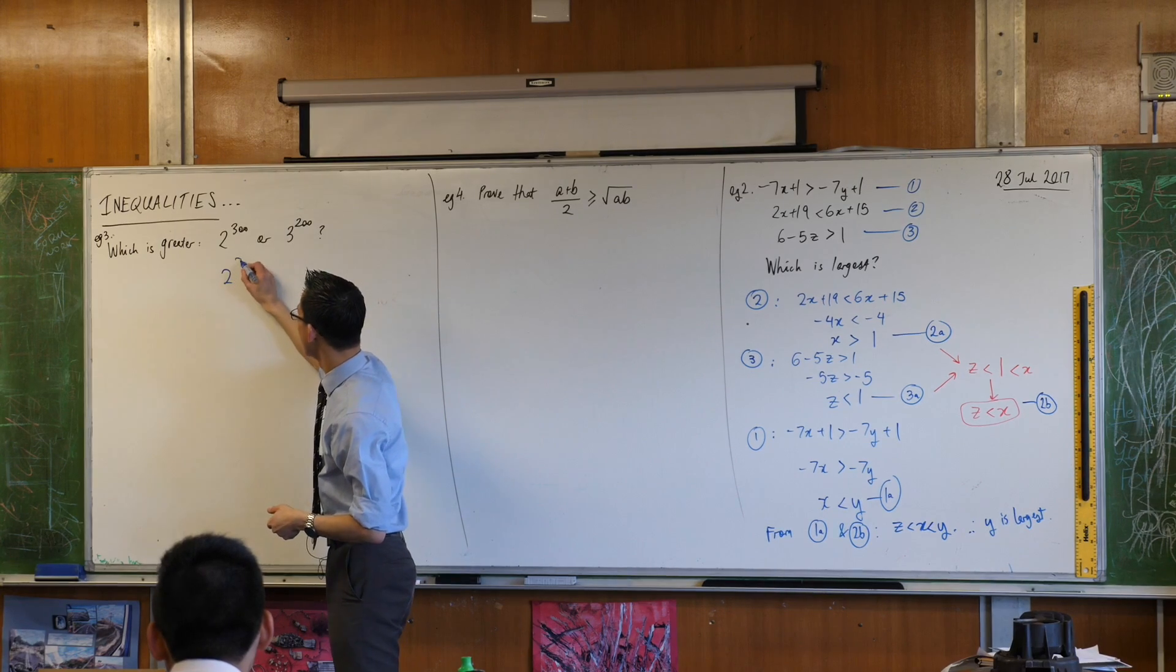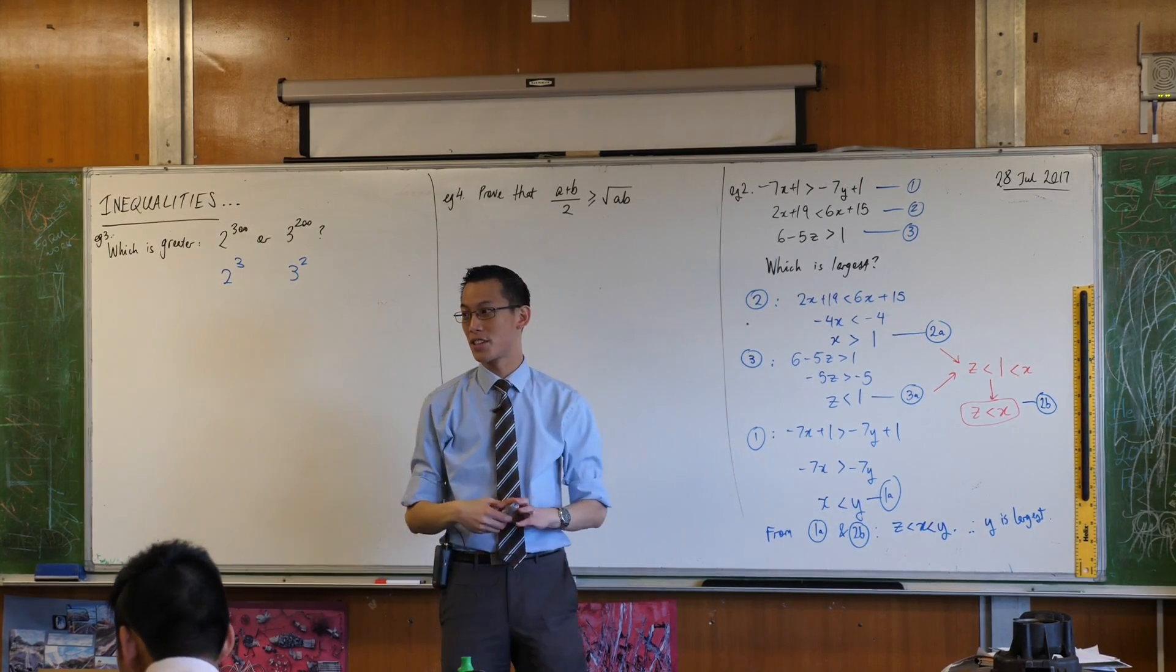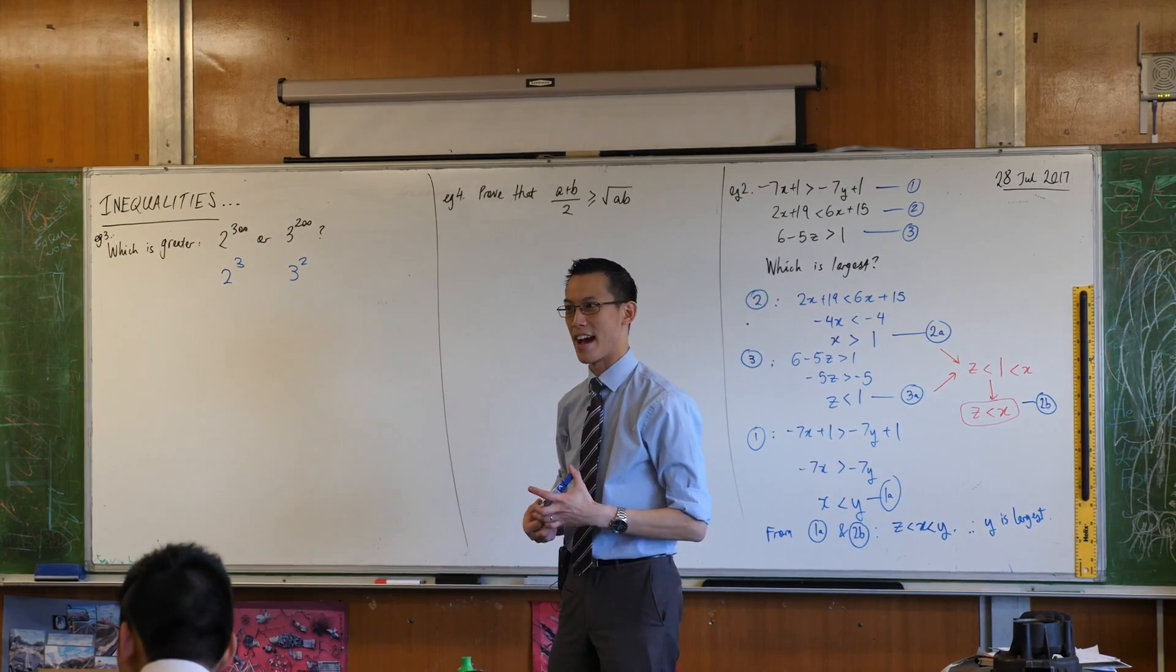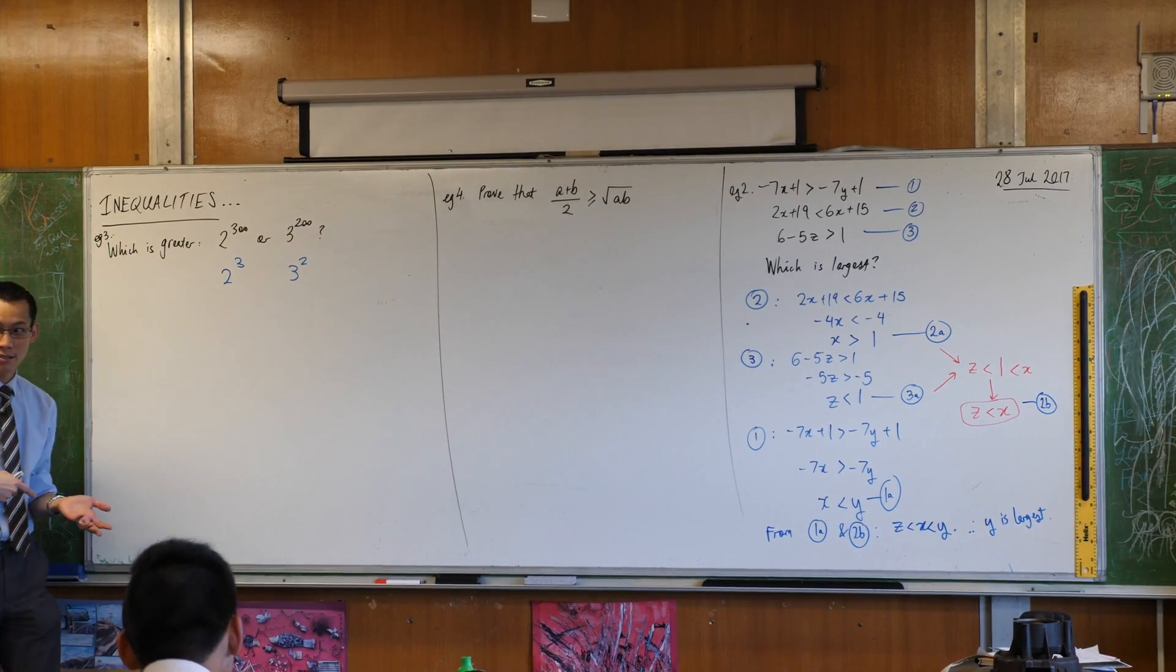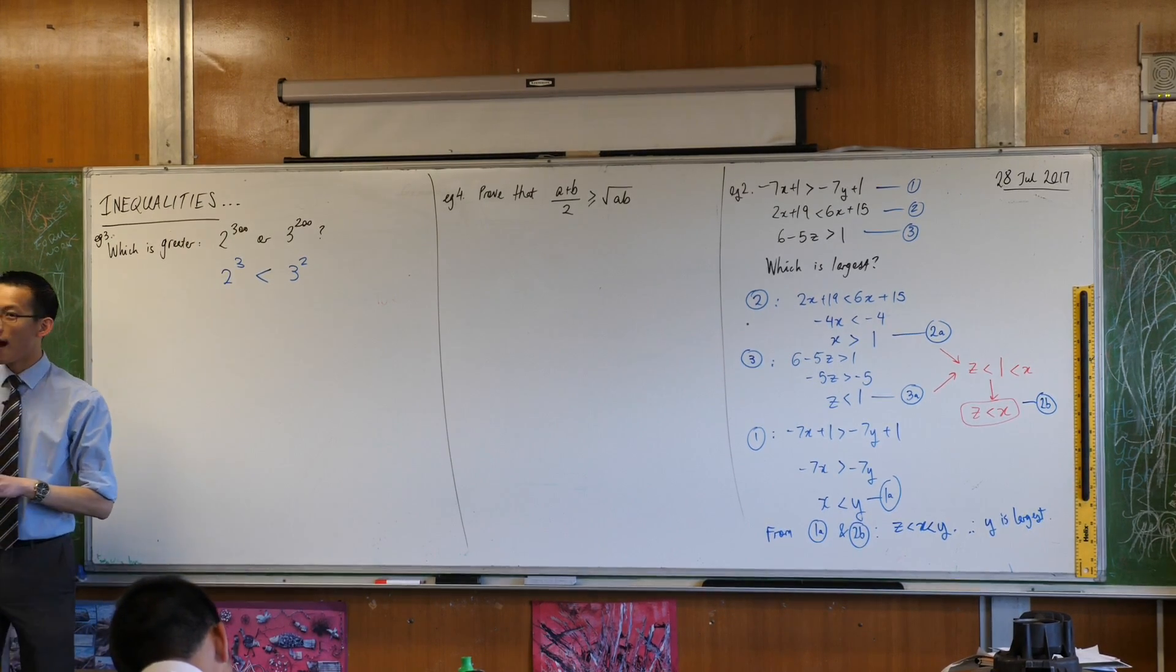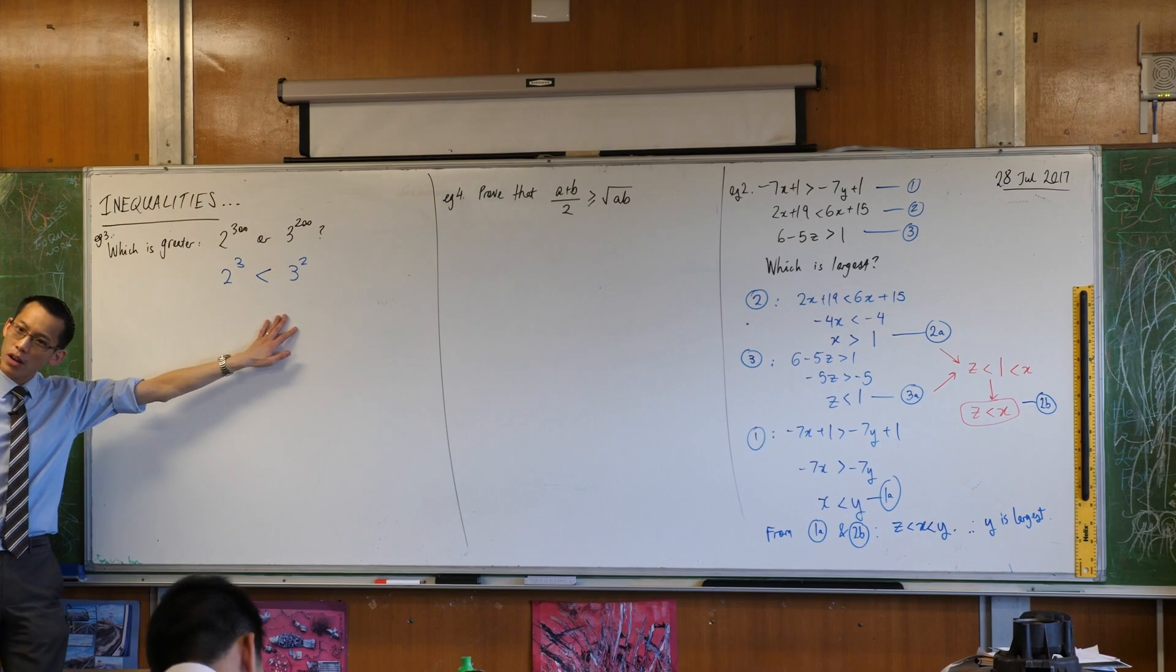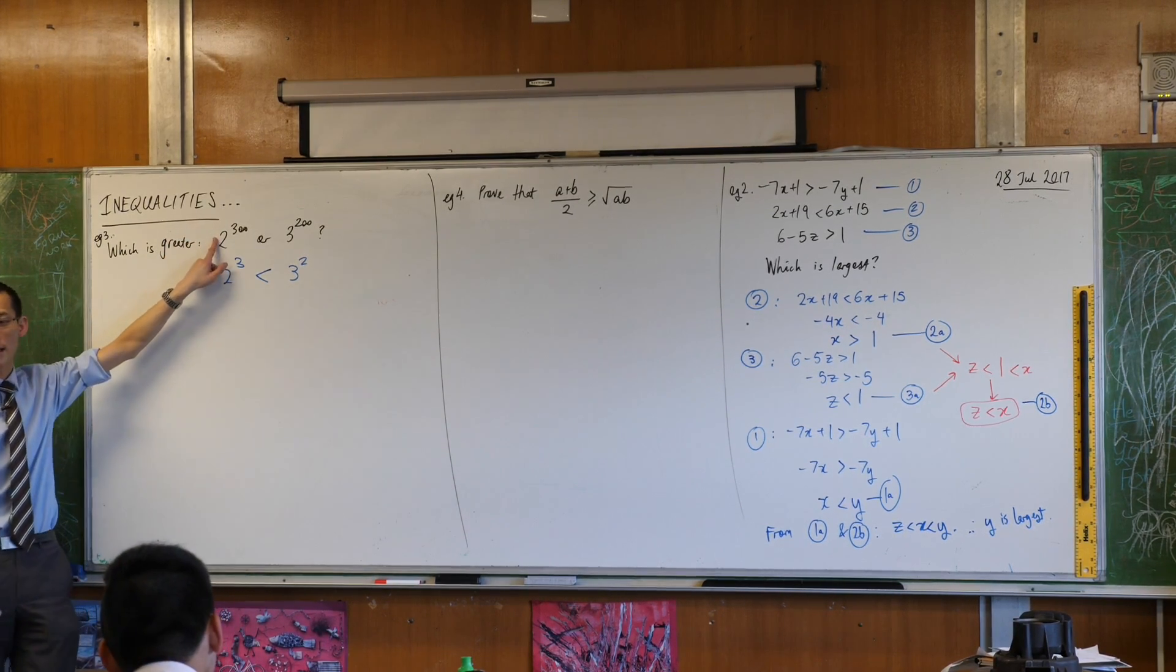So what about these guys? These guys are clearly related to the top ones. Very closely related, in fact. But these I can deal with. What's 2 cubed? It's 8 and 3 squared is 9. So I can say this. I have an inequality statement and I know it to be true. So what I want to try and do is use this as my launch pad to get to something that I don't know about.